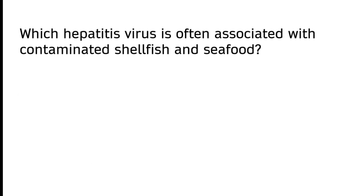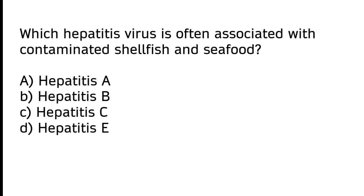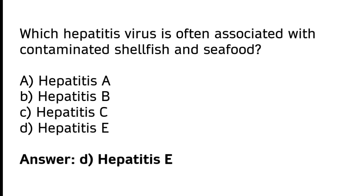Which hepatitis virus is often associated with contaminated shellfish and seafood? A) Hepatitis A, B) Hepatitis B, C) Hepatitis C, D) Hepatitis E. The correct answer is option D — hepatitis E virus is often associated with contaminated shellfish and seafood.